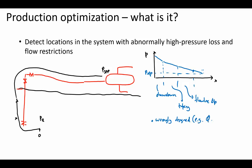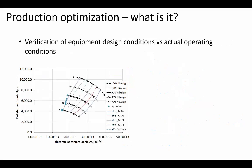Excessive delta P can also occur because something is reducing the cross-section over time. If you monitor the delta P and see it increasing with time, you might have wax, scale, sand, or some sort of accumulation. Addressing these issues is a simple measure that can increase production.